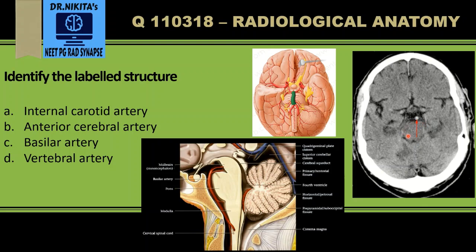This is the pons on the CT scan, and in front of it is the basilar artery — that is why the answer is basilar. Also, if we look at this image, this is the terminal part of the internal carotid artery, which divides into the middle cerebral artery and the anterior cerebral artery.